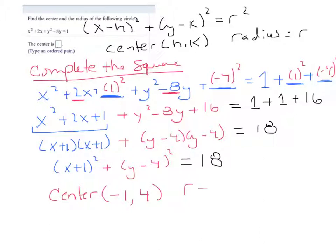Now the radius is the square root of the right-hand side. Now one other thing with the radius, you can break that up into root 9, root 2, factors of 18 that are perfect squares. The square root of 9 is 3, so I'm left with 3 root 2.